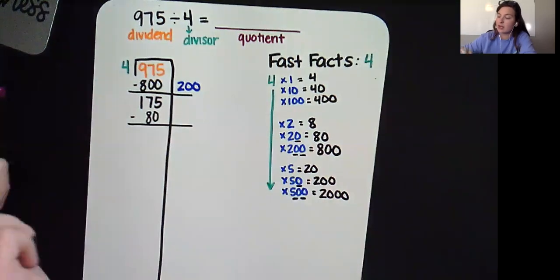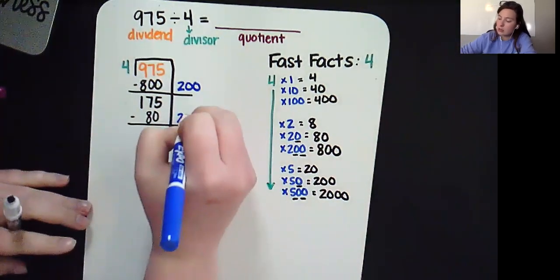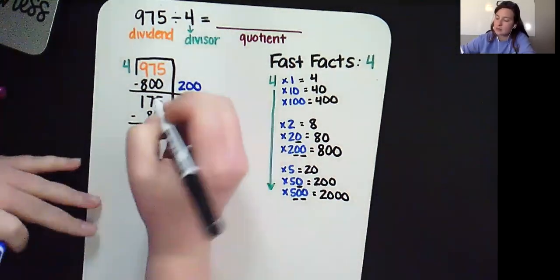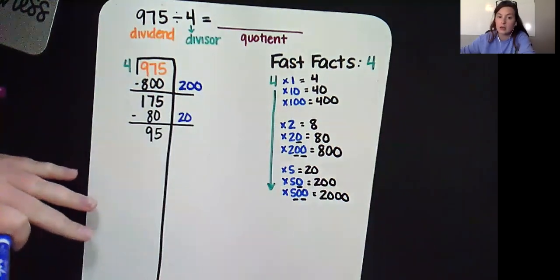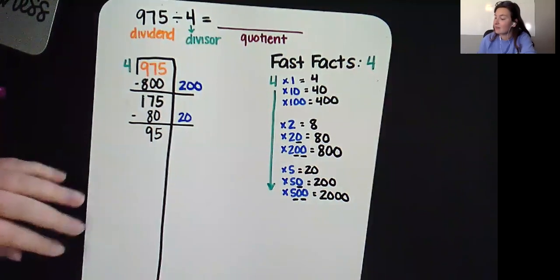To make 80, we multiplied our divisor by 20. Now I'm ready to subtract 5 minus 0 is 5, 17 minus 8 would be 9. So now I've got 95.